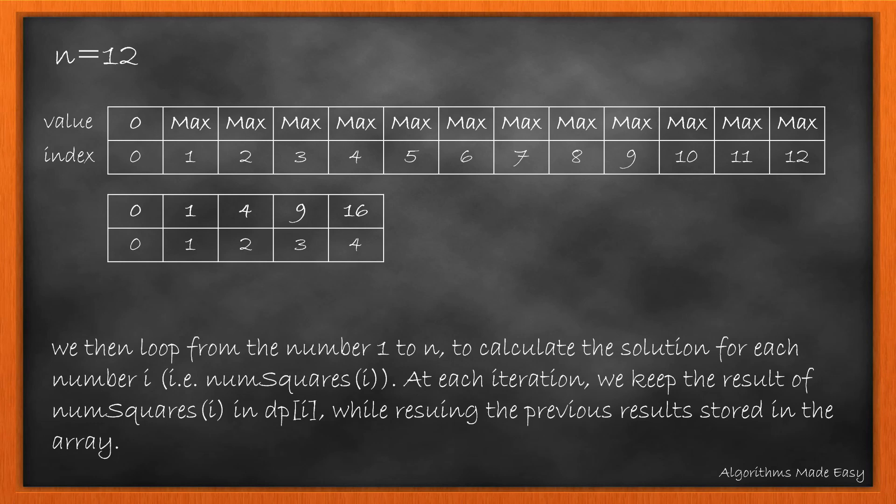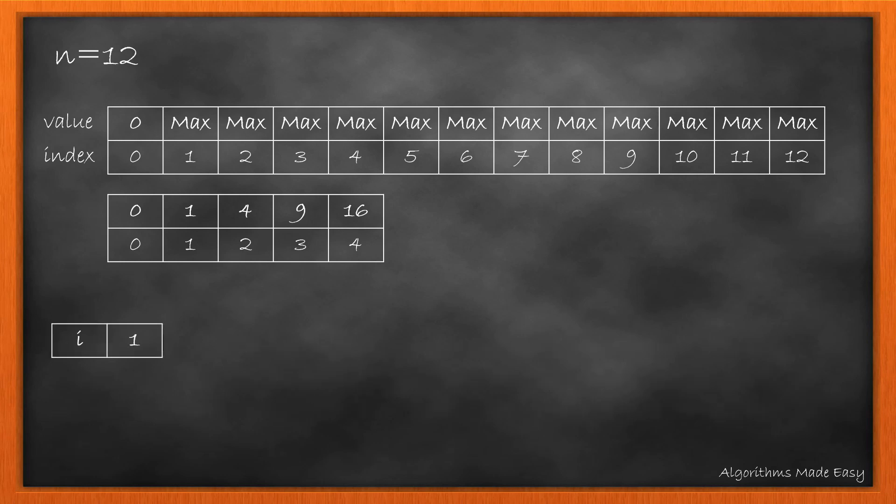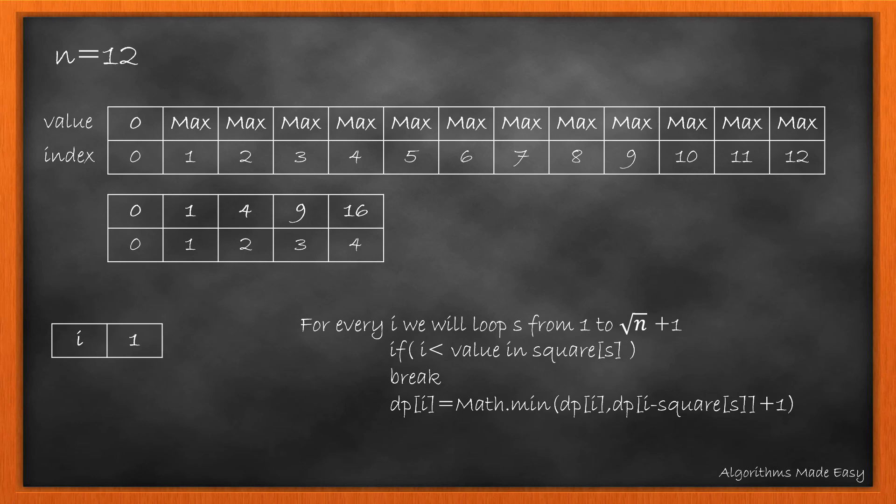We will now loop for all numbers from 1 to n and find the solution for each. At each iteration we keep the result in dp of i while reusing the previous result stored in the array. Starting with i equal to 1 we will iterate from 1 to square root of n plus 1 and follow the condition.